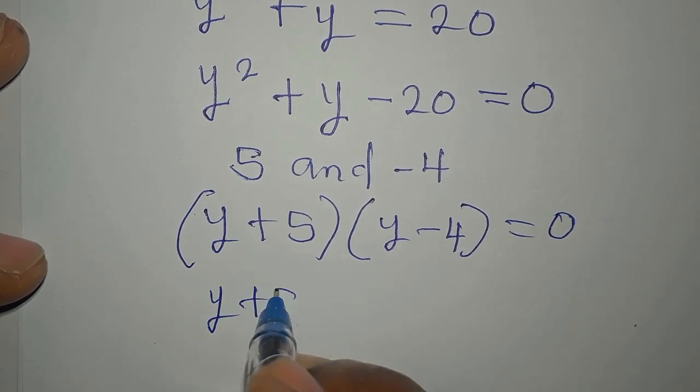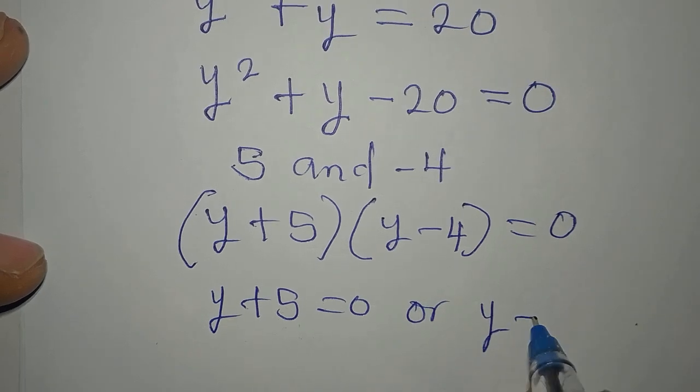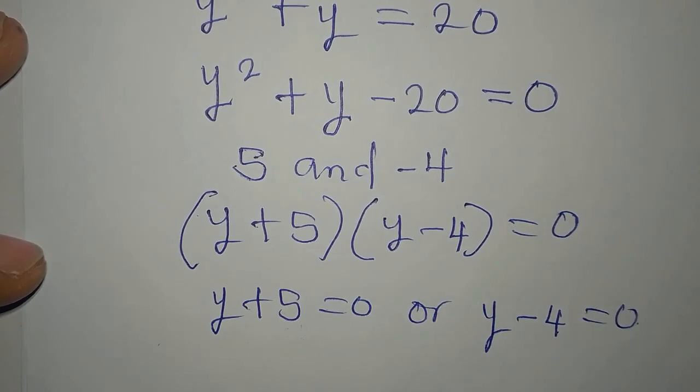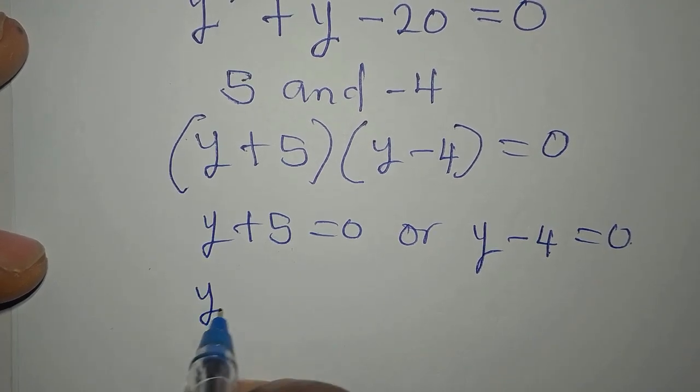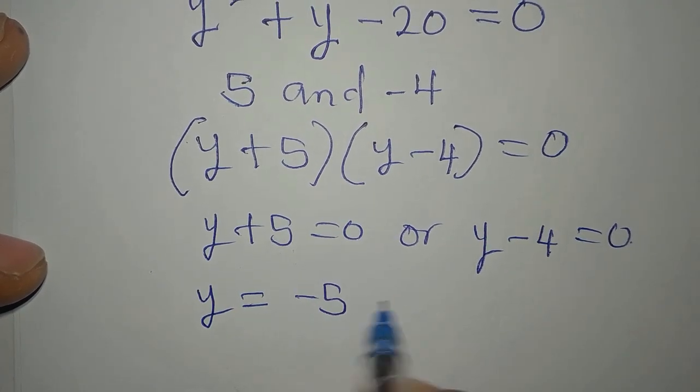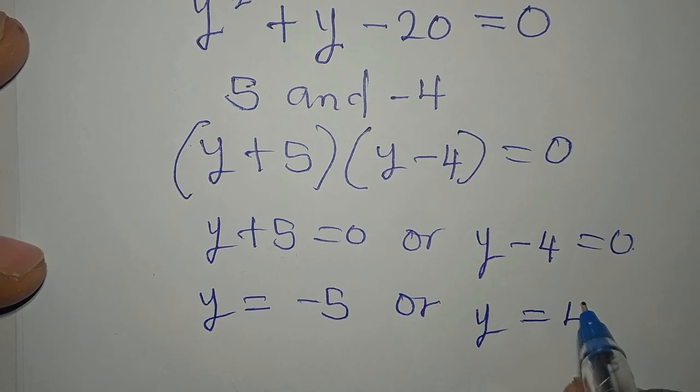Now, y plus 5 is equal to 0, or y minus 4 is equal to 0. If this is the case, then y is equal to minus 5, or on this side, y is equal to 4.